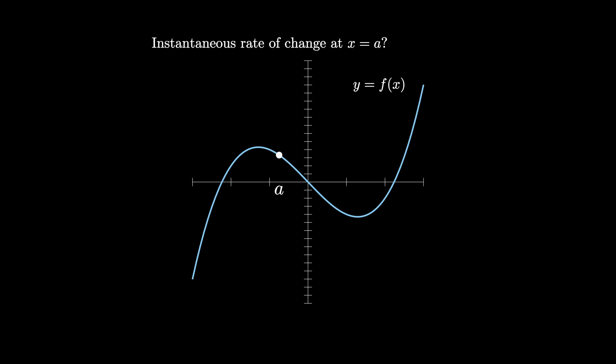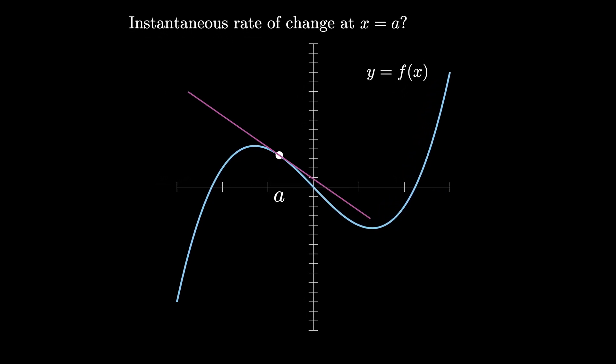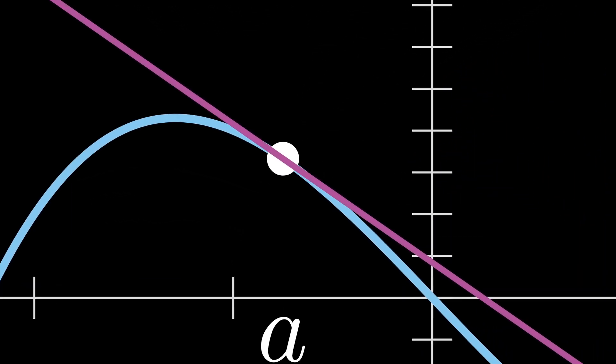To do this, we approximate the curve at the point with a line known as the tangent line. The tangent line passes through the point A comma f of A, and if we zoom in so that we're looking locally, the line looks exactly like the curve — you can't tell them apart. Our goal is to find the slope of this tangent line, and that will give us the instantaneous rate of change of the curve.